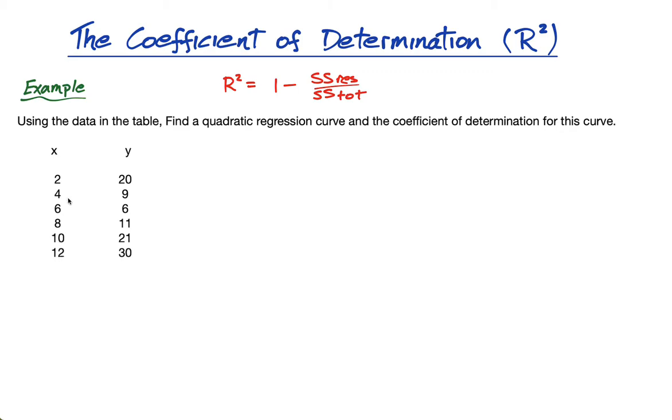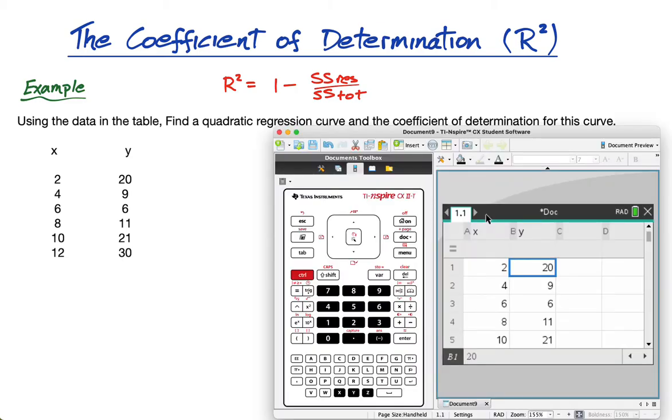So it says, here's some data. I haven't gone to much effort in a real-life example, I've just given us an x value and a y value, and I want us to find a quadratic regression curve and the coefficient of determination for this curve. So, here's my data, I've already put in the data, I've called this x and I've called this y.